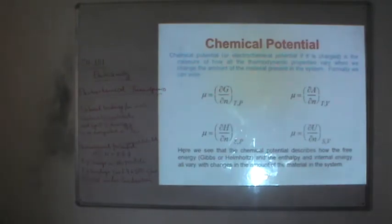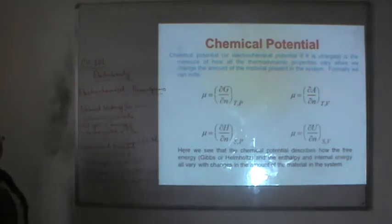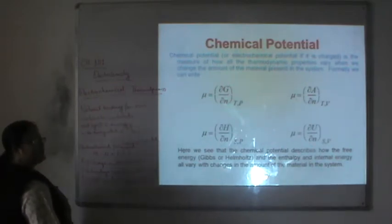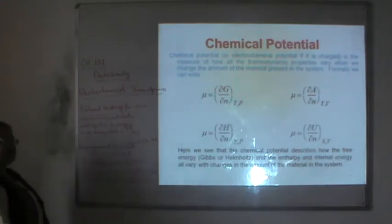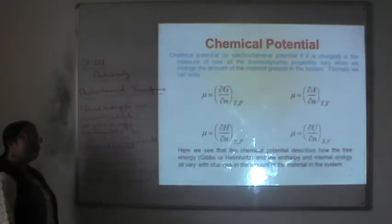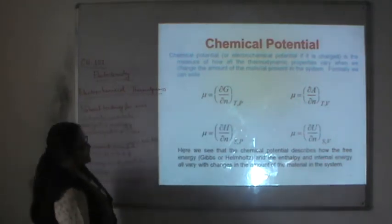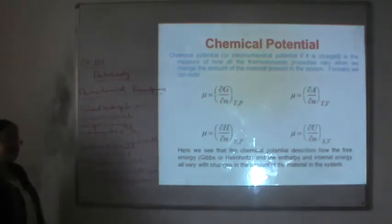Chemical potential is the measure of how all thermodynamic properties change with the amount of material present in the system. It can be written as: μ = (∂G/∂N) at constant P, or (∂A/∂N), or (∂H/∂N) at constant S, or (∂E/∂N). Chemical potential describes how the Gibbs free energy G, Helmholtz free energy A, and total energy all vary with the amount of material in the system.